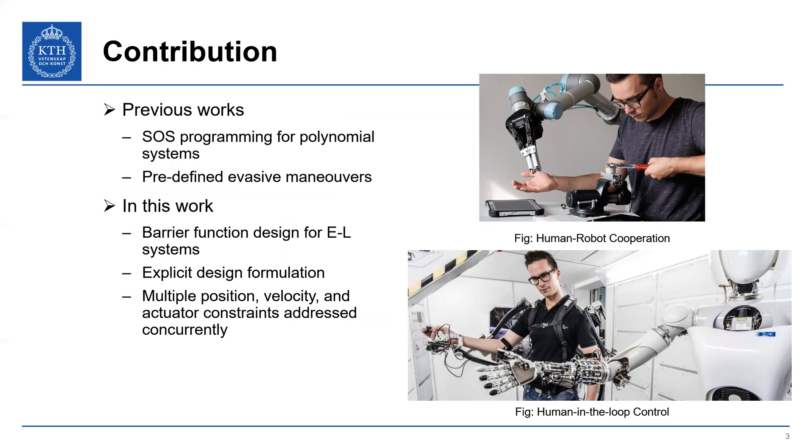Some previous work has looked at how to ensure safety for Euler-Lagrange systems. We focus specifically on control barrier function methods. One of which is sum of squares programming, SOS programming which is restricted to polynomial systems which does not represent Euler-Lagrange systems. Another more recent approach is defining an evasive maneuver for the control barrier functions. However, this is dependent on knowing what an evasive maneuver should be a priori, which is not straightforward for a general Euler-Lagrange system.